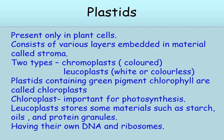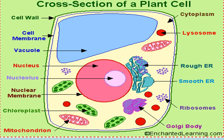Leucoplast stores materials such as starch, oil and protein granules. Plastids have their own DNA and ribosomes. You can see chloroplast in plant cell.